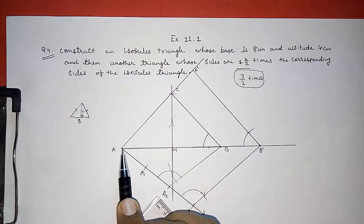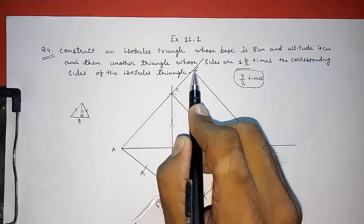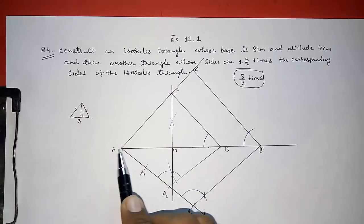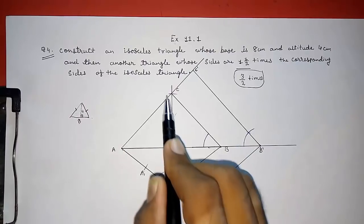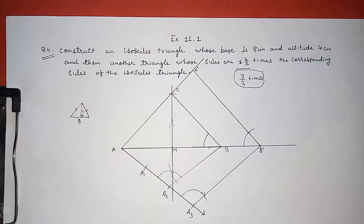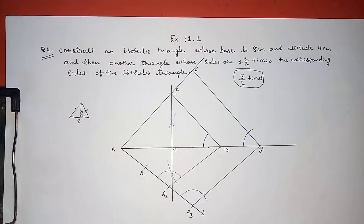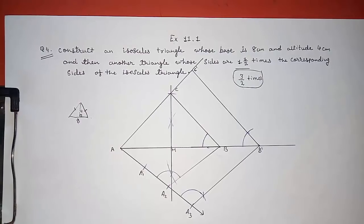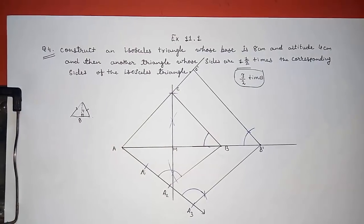So here our new triangle, that is A B dash C dash, will be 3/2 times of our triangle ABC. Thank you so much for watching my video. If you like it, please subscribe to my channel so that I can bring more such videos for you. Thank you so much.